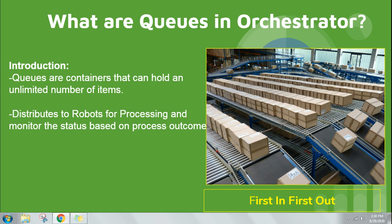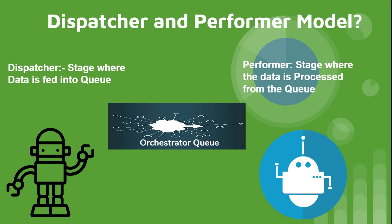If you ask how many rows you can process through orchestrator, the answer is unlimited — unlimited data can be processed. That is the key advantage of an orchestrator queue. Orchestrator also has the ability to distribute items to several robots that are available in your environment.